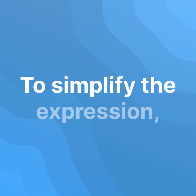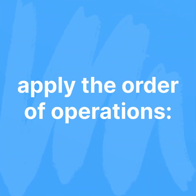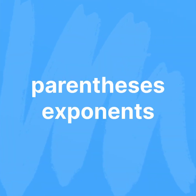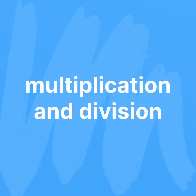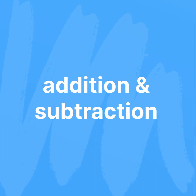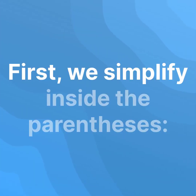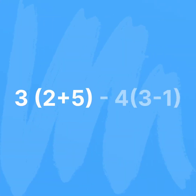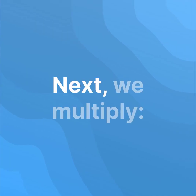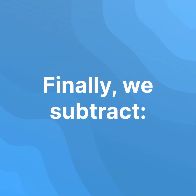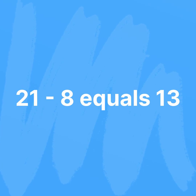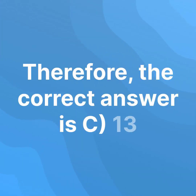To simplify the expression, apply the order of operations: Parentheses, Exponents, Multiplication and Division, Addition and Subtraction — each from left to right. First, we simplify inside the parentheses: 3(2 plus 5) minus 4(3 minus 1) becomes 3 times 7 minus 4 times 2. Next, we multiply: 3 times 7 minus 4 times 2 becomes 21 minus 8. Finally, we subtract: 21 minus 8 equals 13. Therefore, the correct answer is C. 13.